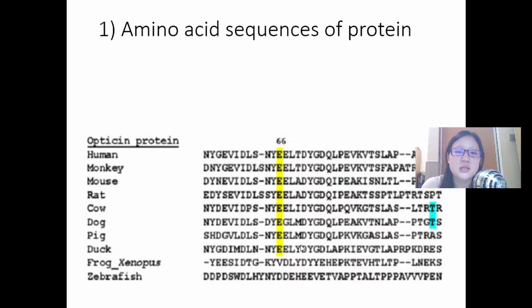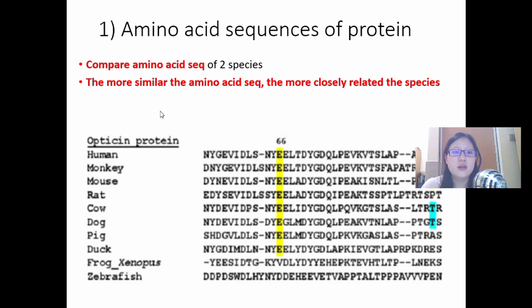Let's start with the evidence. Number one, amino acid sequences of proteins. This is a process where you take two species, you take their amino acid sequence for maybe a particular protein. In this case, it's the Opticin proteins. Based on the name, you can probably guess that it's found in your eye. Compare these two amino acid sequences. And you realize that the more similar the amino acid sequences, the more closely related the species.